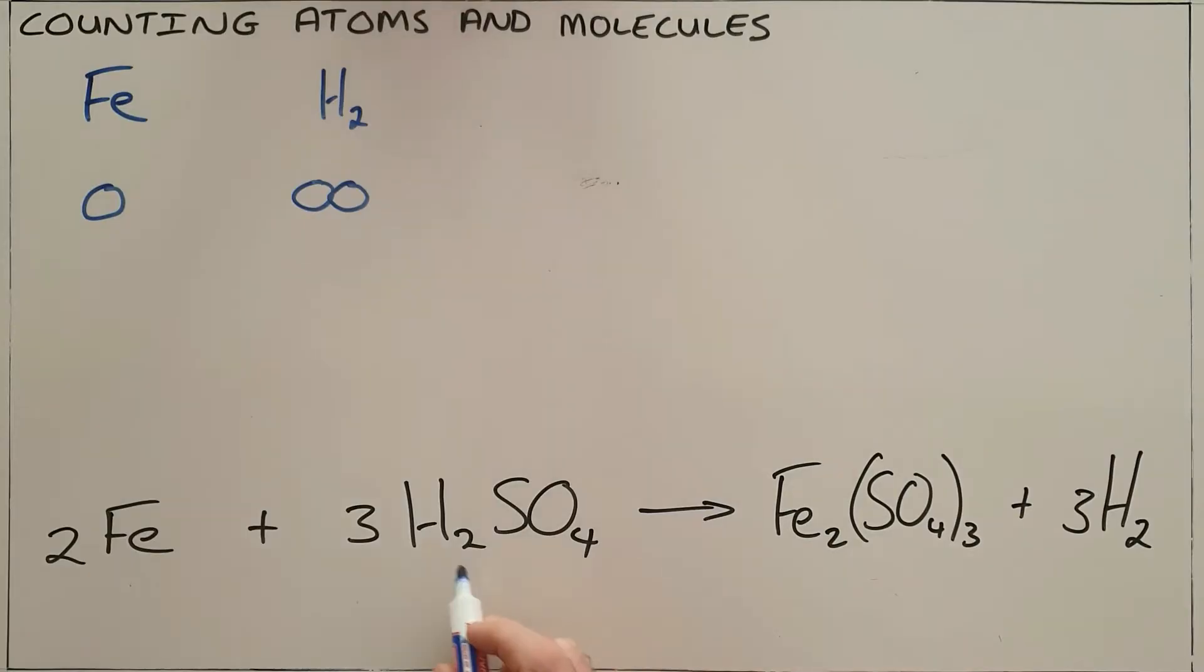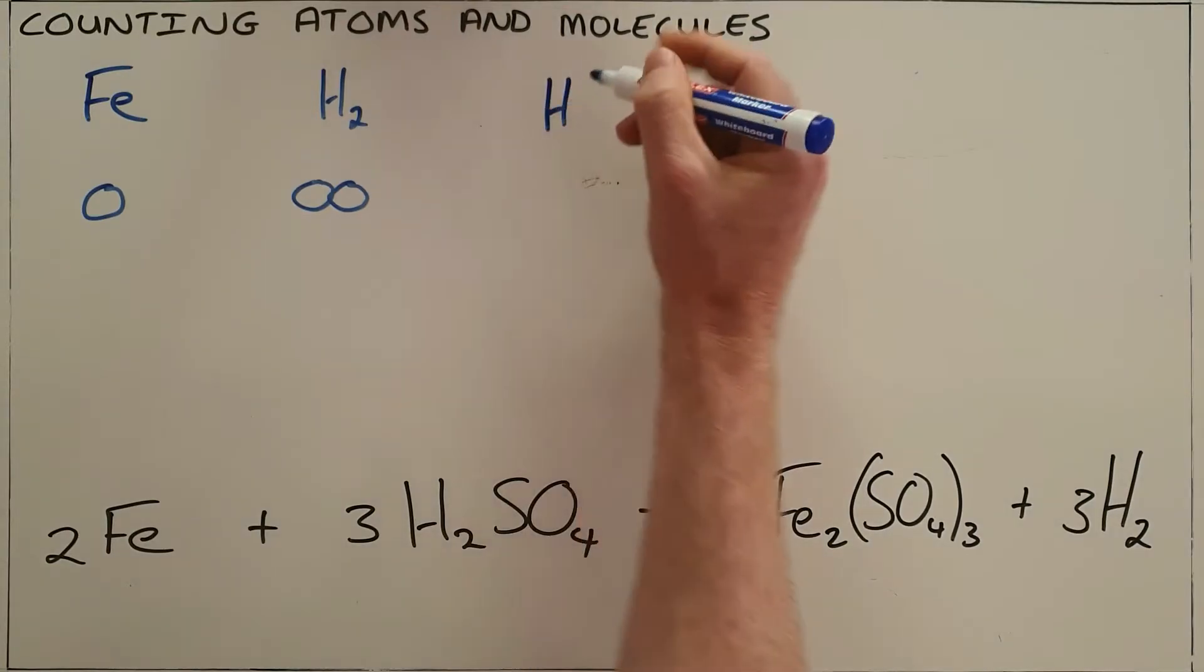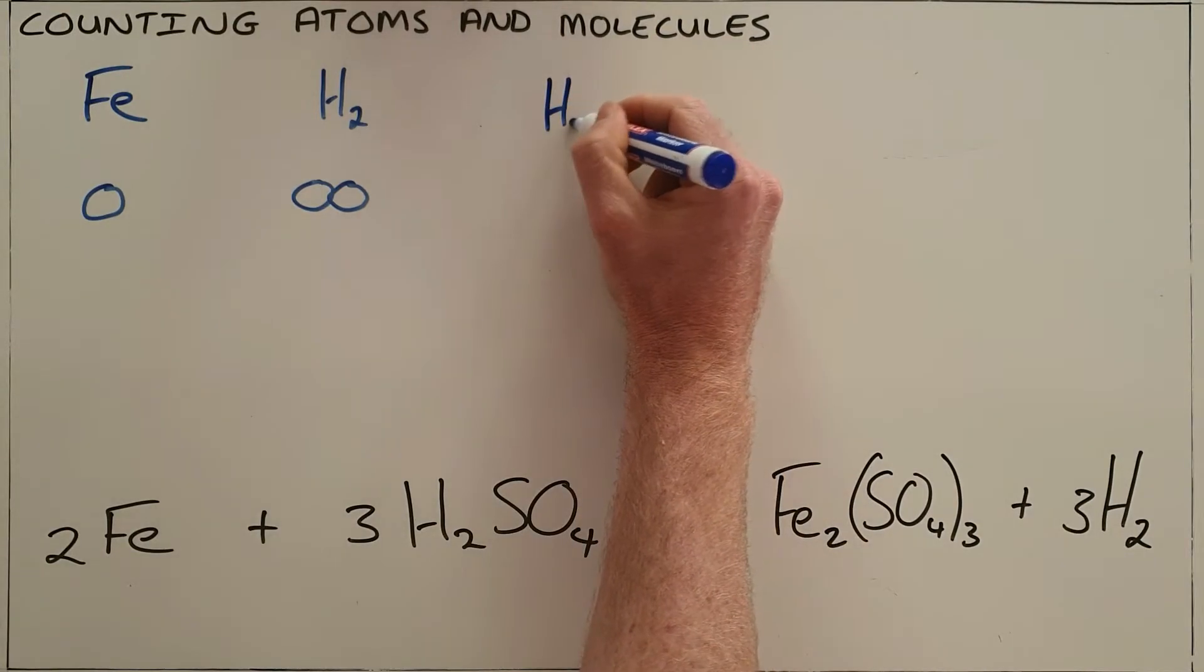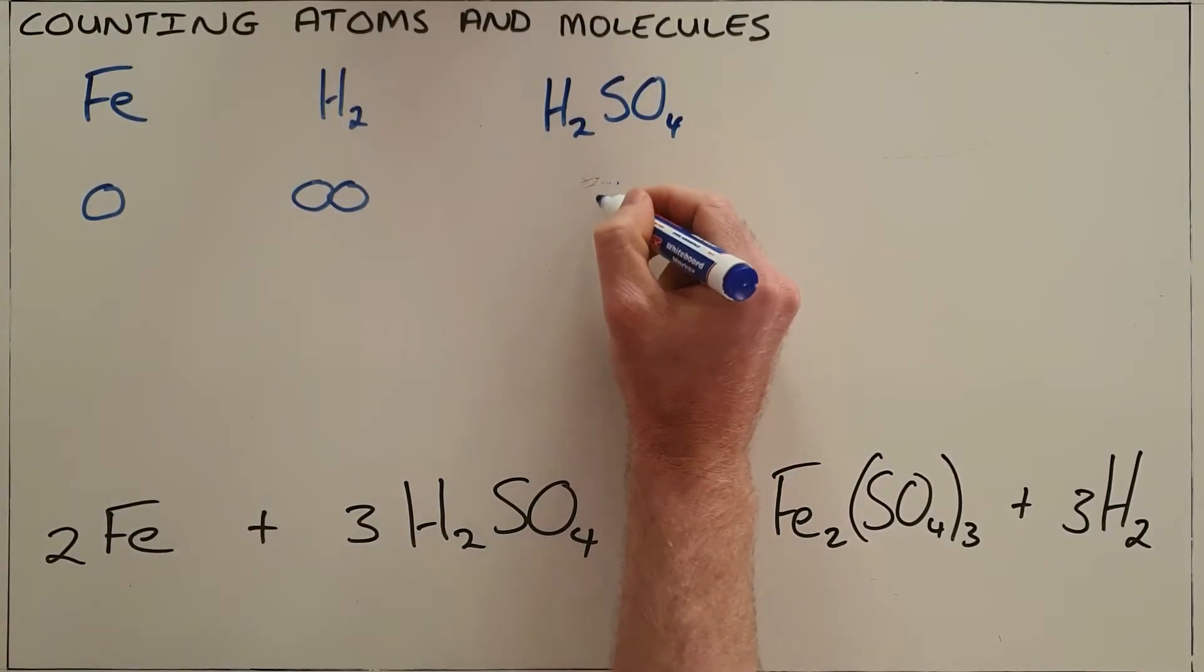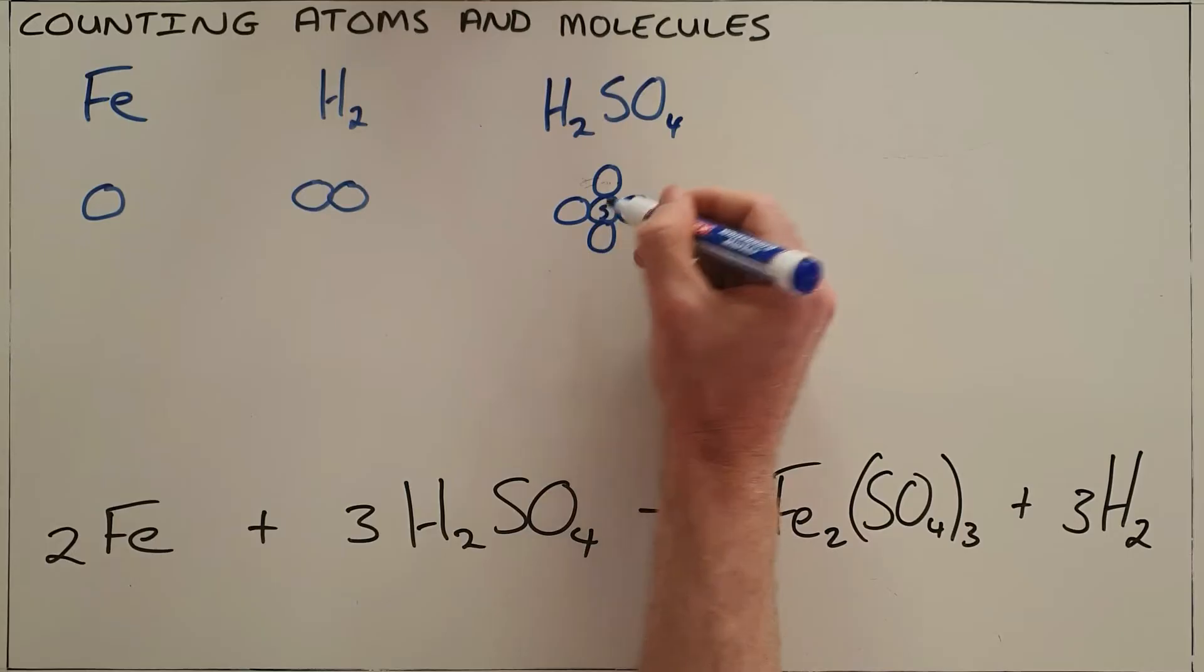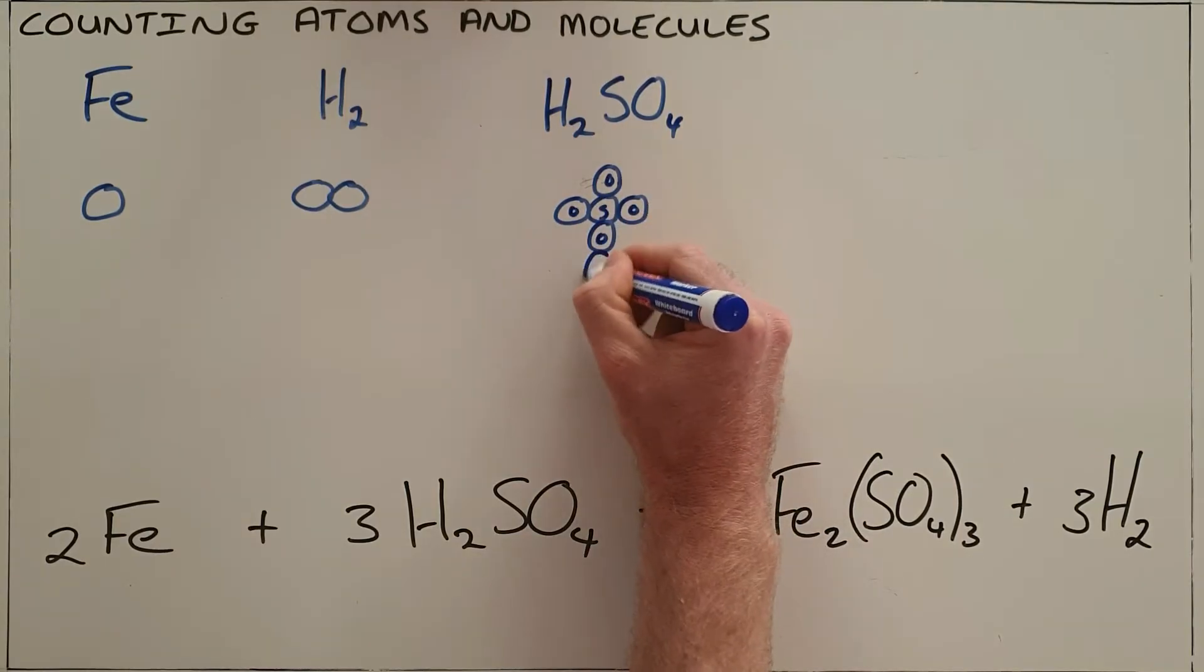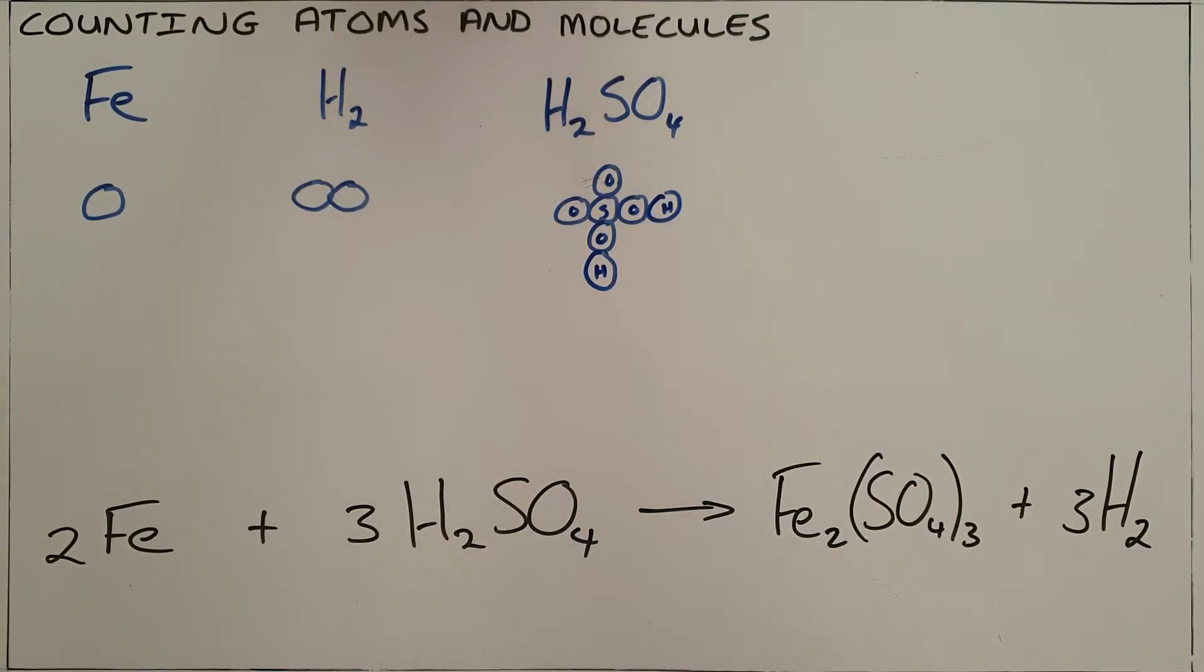And then finally over here we've got H2SO4, hydrogen sulfate or sulfuric acid, which as we can see is a compound or a molecule of that compound, H2SO4, which would look something like this: a single sulfur that is bonded to four oxygens, and two of those oxygens are bonded to individual hydrogens.